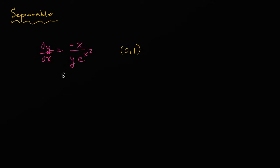Let's use a little bit of algebra to get all the y's and dy's on one side, and all the x's and dx's on the other side. I want to get all the y's and dy's on the left-hand side and all the x's and dx's on the right-hand side. I can multiply both sides by y, which puts the y's on the left-hand side, and then multiply both sides by dx. You can treat these differentials as you would treat a variable when manipulating them to separate out the variables.